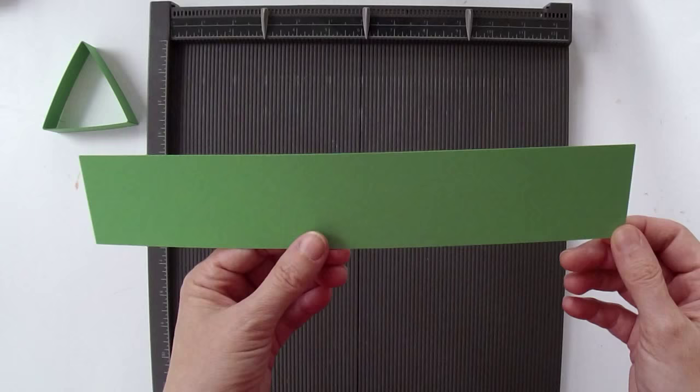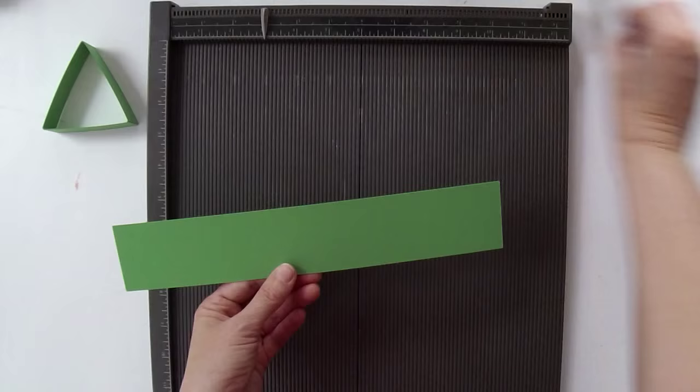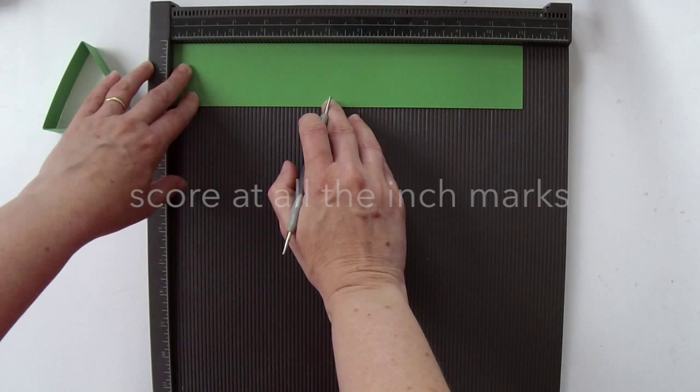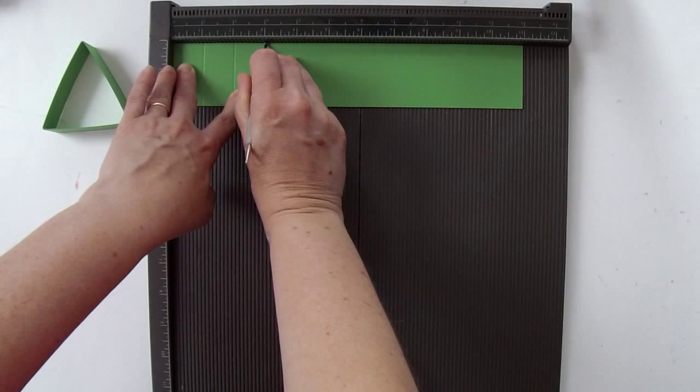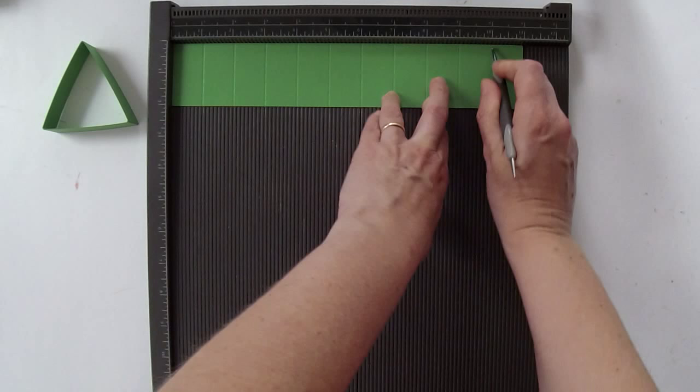So you're going to need a piece of paper that is 11 inches by 2 inches and I'm going to pop off these little markers right here so we don't get confused. And now we're going to score at all of the inch marks. So 1 inch, 2 inch, 3 inch, 4 inch, 5 inch, 6 inch, 7 inch, 8 inch, 9 inch, and 10 inch mark.